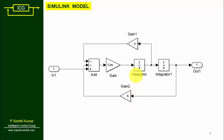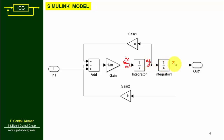This is the Simulink model of the spring-mass-damper system. First I will explain the model, then we will see how to build it step by step. Here we have d²x/dt² (acceleration). Integrating acceleration gives dx/dt (velocity), and integrating velocity again gives x (displacement). This displacement x is what we need to find, and it will be connected to the scope.